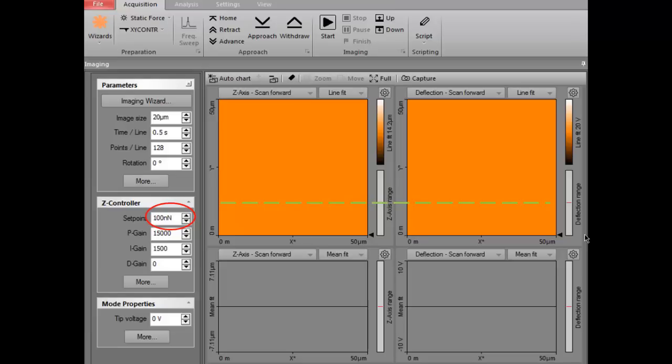When a quarter of the image is done, reduce the setpoint value by a factor of two. That means you should change it to 50 nanonewtons. Do not forget to hit the enter key when you input the value. After half of the image is done, reduce the setpoint value by a factor of two again. It should be 25 nanonewtons now. And do the same thing in the last quarter of the image. This process is called bracketing. Notice the streaks at lower setpoint values in the images.